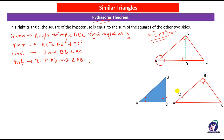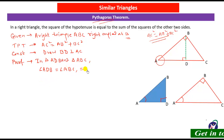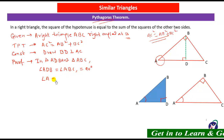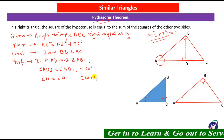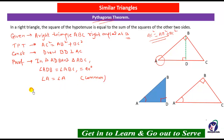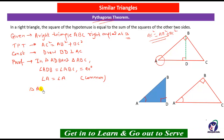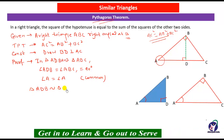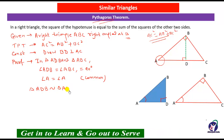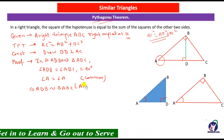Therefore by the AA criterion, angle ADB = angle ABC = 90 degrees, and angle A = angle A (common). Therefore, triangle ADB is similar to triangle ABC by the AA criterion.